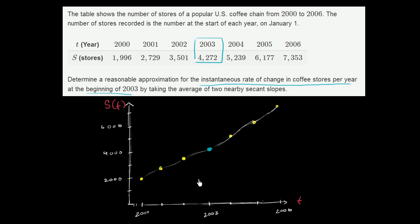So when they're saying the instantaneous rate of change in coffee stores per year, so this is the instantaneous rate of change of stores per time. They're really saying, we need to approximate the slope of the tangent line in 2003, when time is 2003. So the tangent line might look something like that. I want to draw it so you see that this line right over here is tangent.